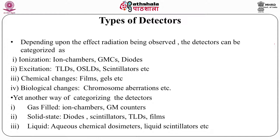Then there is the biological effect of radiation, which I have discussed in another module on radiation carcinogenesis. Radiation can cause biological damages or biological changes. Detectors based on biological changes — for example, chromosome aberrations — can be used: if we can measure those chromosome aberrations, we would be able to detect radiation and the dose absorbed.